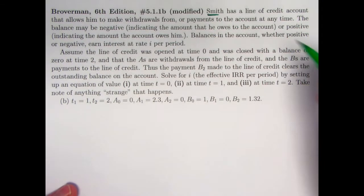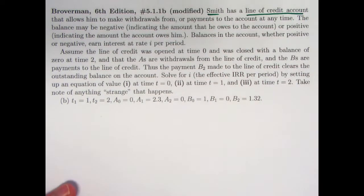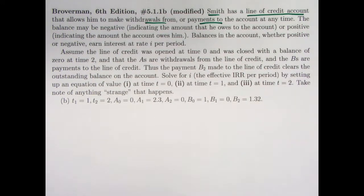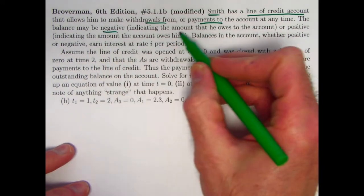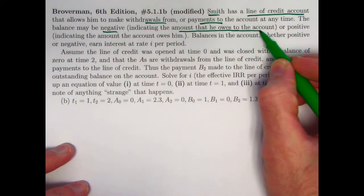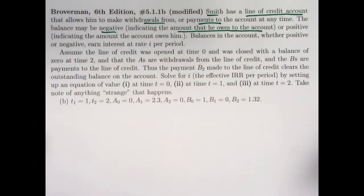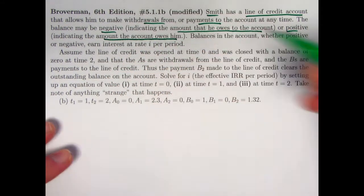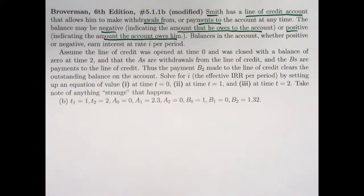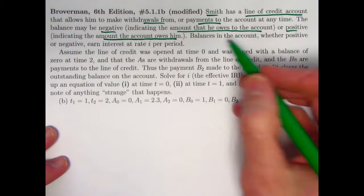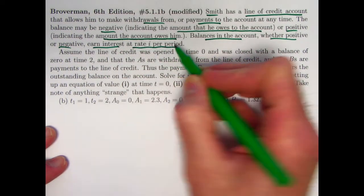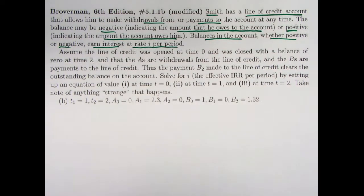So we have our generic investor, Smith, who has a line of credit account. This allows him to both make withdrawals from and payments to the account at any time that he wants. Balance may be negative, indicating the amount that he owes the account, so effectively he's borrowing from the account and he's got to pay it back. Or positive, indicating the amount the account owes him, essentially, then he is depositing money that's going to earn interest like a savings account.